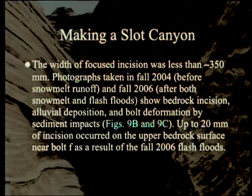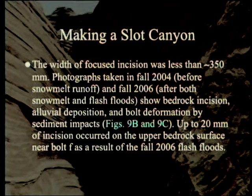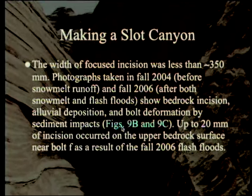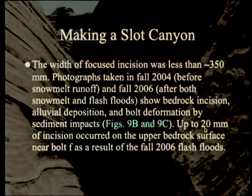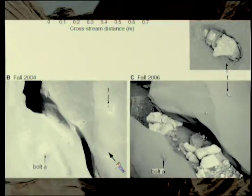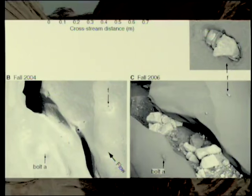Photographs taken in fall 2004 and fall 2006 show bedrock incision, alluvial deposition, and bolt deformation by sediment impacts — the bolts were almost torn off, and some were eroded completely out. Up to 20 millimeters of incision occurred on the upper bedrock surface near bolt F as a result of the fall 2006 flash floods. You can see bolt A, bolt F, and a couple more they put in to get an idea of scale.